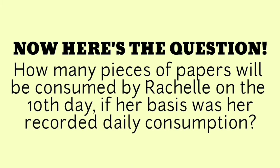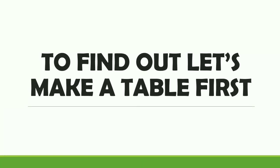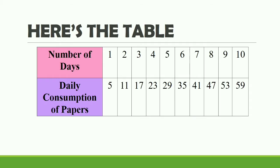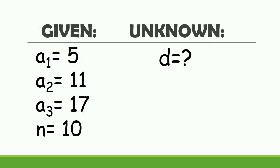Now here's the question: how many pieces of paper will be consumed by Rachel on the tenth day, if her basis was her recorded daily consumption? To find out, let's make a table first. Note: a table helps you solve a problem easier. Here's the table showing the number of days and the daily consumption of papers. Given: a sub 1 is equal to 5, a sub 2 is equal to 11, a sub 3 is equal to 17, n is equal to 10, and d is the unknown.